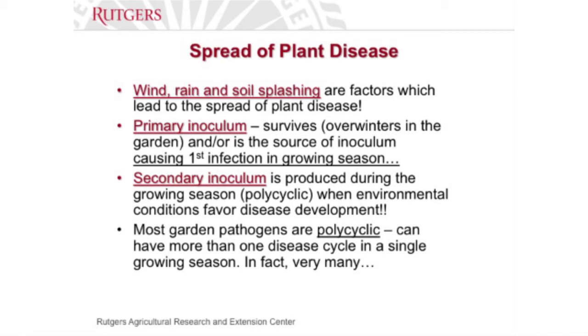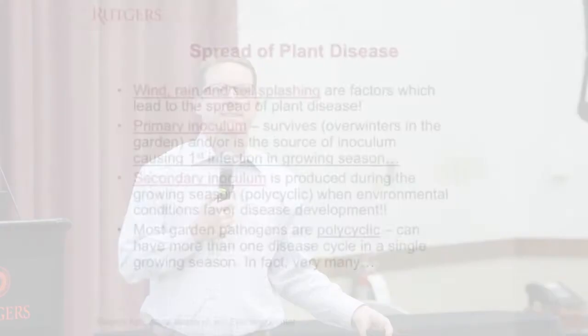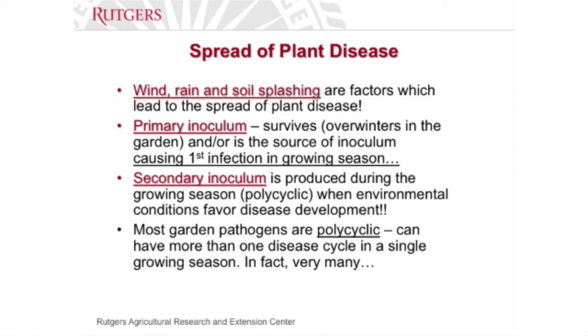When composting, it needs to decompose and reach a certain killing temperature that kills everything present as the compost starts to decompose. You've got to get that heat in the compost pile so everything dies. If you just dump kitchen scraps in a pile in the backyard without managing it properly, you're not really composting — you're just making a mess and attracting critters.